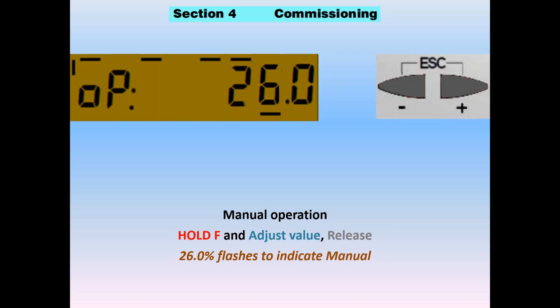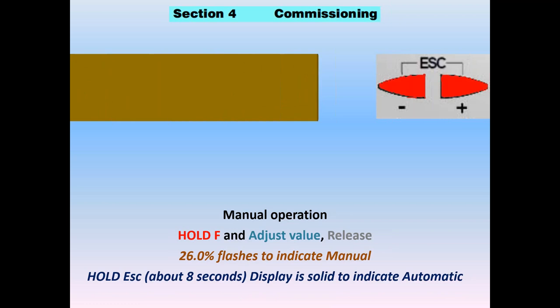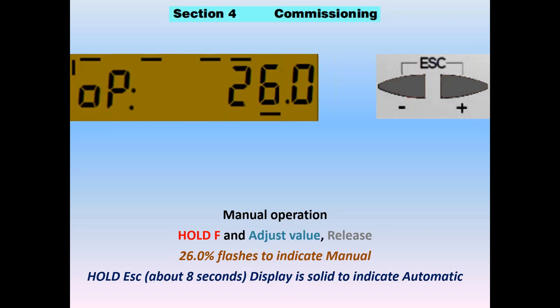To go back to automatic, hold escape for about eight seconds. The screen will go blank, then release. Now it says 'operate 26%' and the display is solid, indicating you're in automatic operation at the mercy of the load controller.